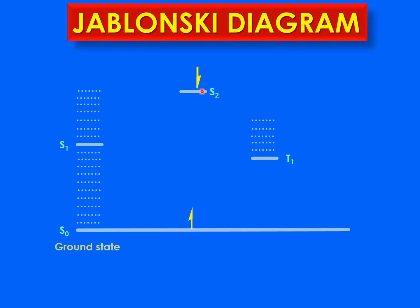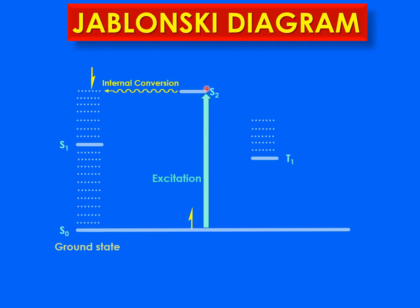This electron jumps from the lowest vibrational state of S2 to a higher vibrational state of S1. The dotted lines show the vibrational states of each energy level — these are the vibrational states of S0, S1, and T1. So the electron in S2 jumps to a higher vibrational state of S1, and this process is known as internal conversion, in which the spin of the electron remains the same and it jumps from one excited state to another excited state at a higher vibrational level.